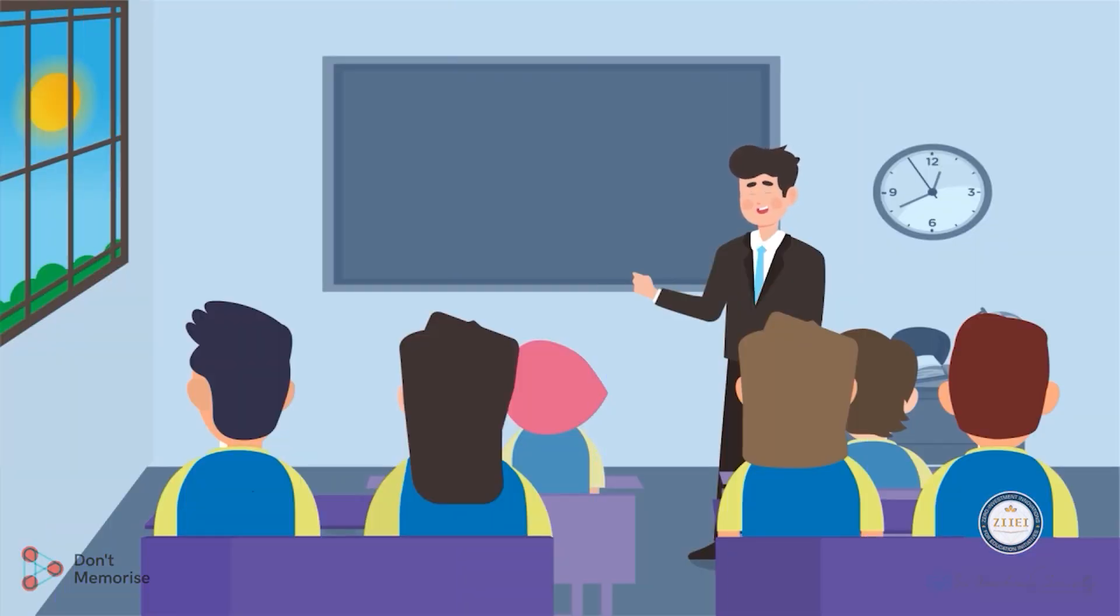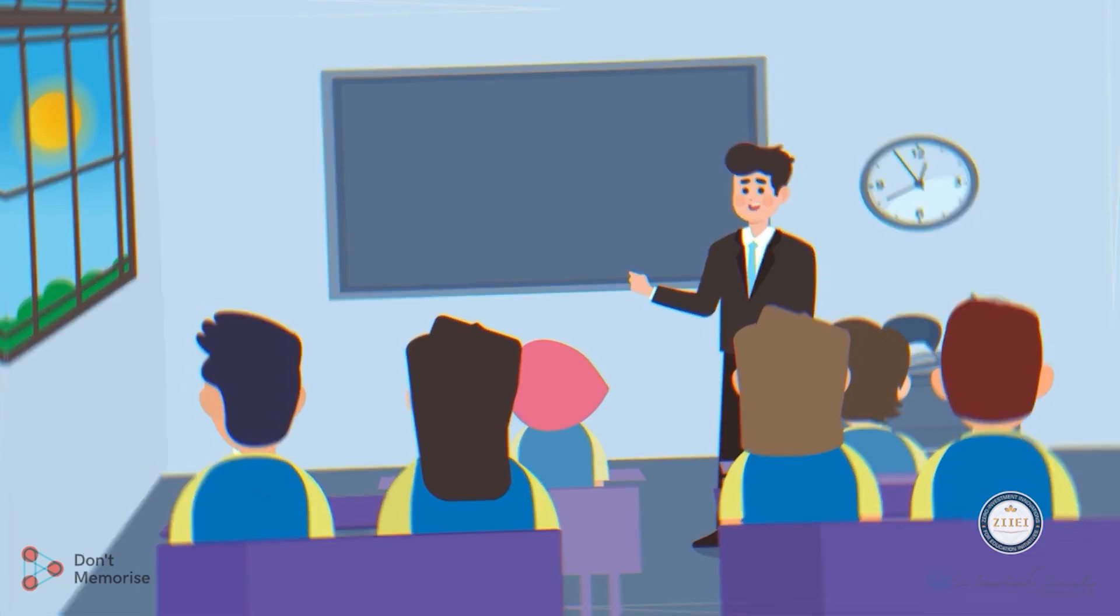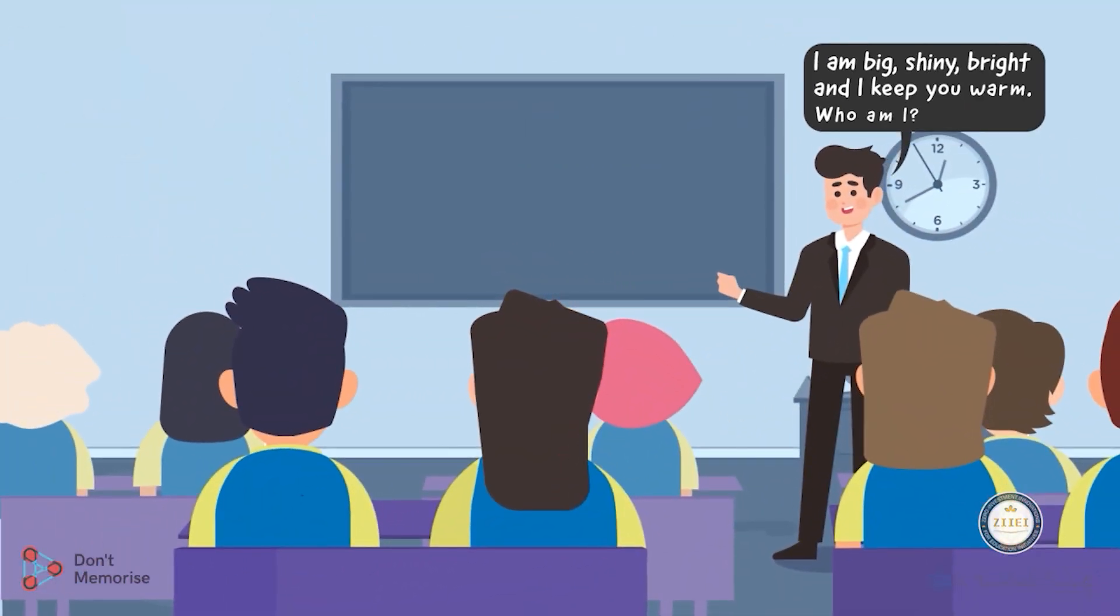For instance, the first hint can be given by asking the students to look outside the window, and we will say: 'I am big, shiny, bright, and I keep you warm. Who am I?' The students might respond by saying it's the Sun.